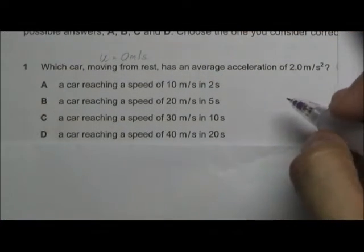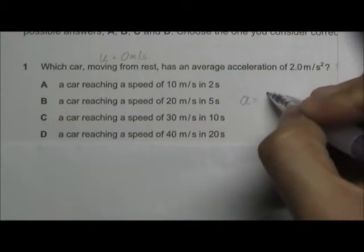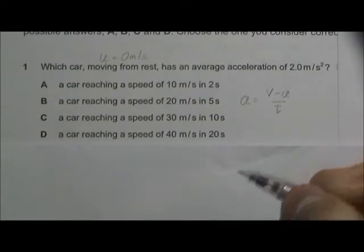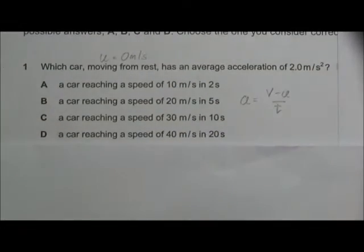We can use the formula A equals v minus u over t to find the acceleration. Let us calculate the acceleration for the four options.